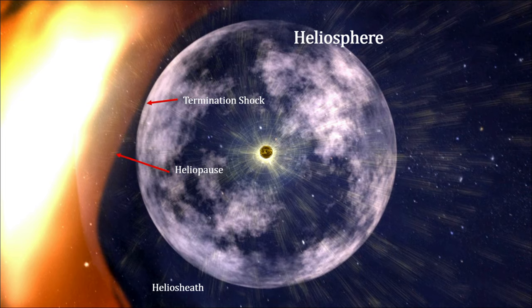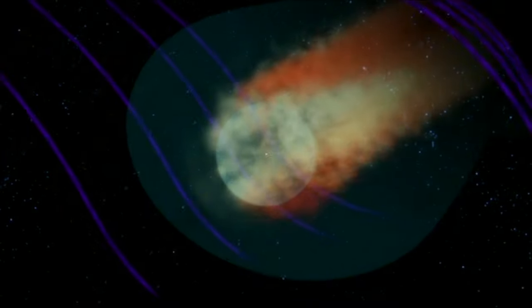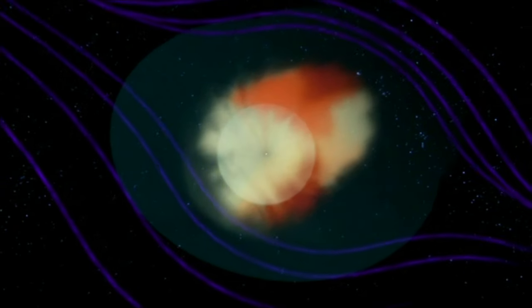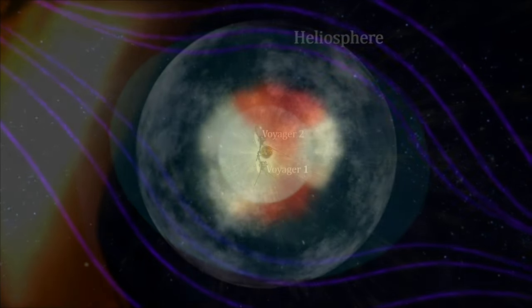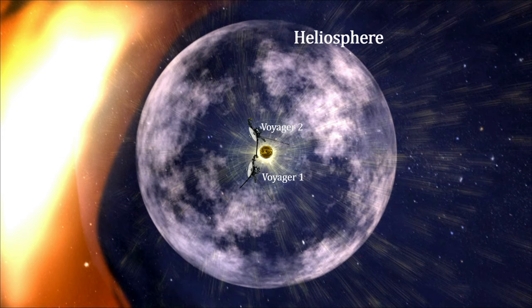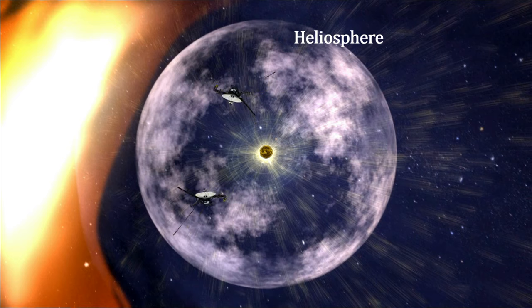The heliopause is where the solar wind is not strong enough to push back against the stellar wind and is stopped by the interstellar medium. At the bow shock, where the solar wind pushes against the competing force of the stellar wind, a bow shock wave forms in front of the heliosphere. NASA's Voyager 1 and 2 spacecraft have reached the innermost boundary of the heliosheath, twice as far from the Sun as Pluto's orbit.